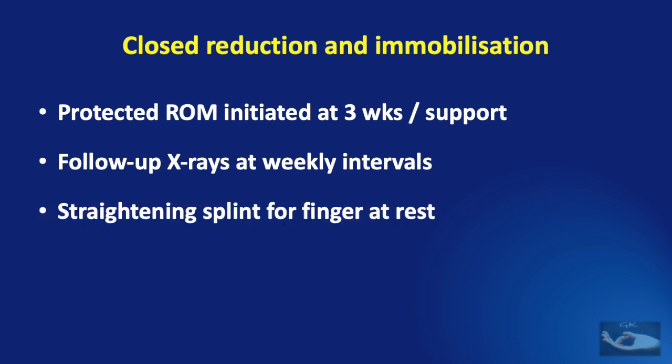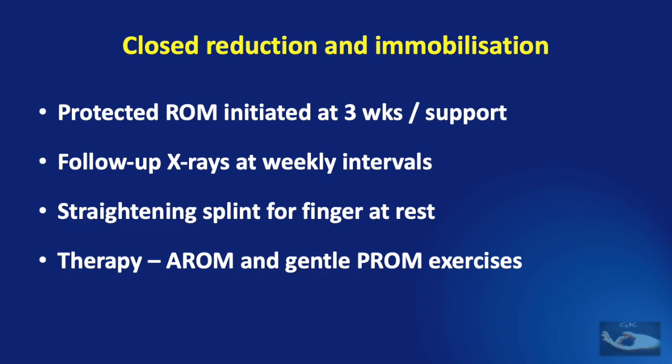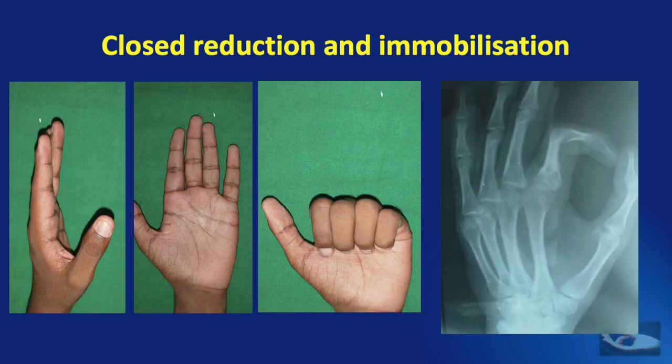A straightening splint for the finger must be applied at rest. Therapy must consist of active range of movement exercises and gentle passive range of movement exercises. This young man sustained a simple fracture of the shaft of the proximal phalanx of the left hand index finger, which was immobilized in a POP slab for 3 weeks. This is the outcome at the end of 1 month after removing the POP and instituting therapy.